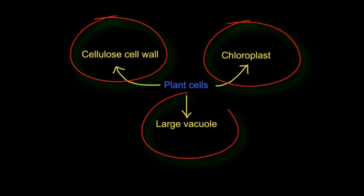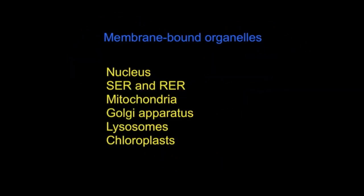Plant cells also have a large vacuole, unlike animal cells which have only small vacuoles. In conclusion, eukaryotic cells have a compartmentalized structure because they contain membrane-bound organelles: the nucleus, smooth and rough endoplasmic reticulum, mitochondria, Golgi apparatus, lysosomes, and in plant cells only, chloroplasts.